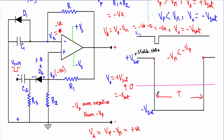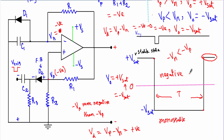This monostable multivibrator has restored its previous stable state after a certain interval. Plus Vsat is the only stable state of this multivibrator circuit — that's why it is called monostable. By applying a single triggering pulse I have generated a single negative output pulse, which is why this is known as a one-shot or single-shot multivibrator.